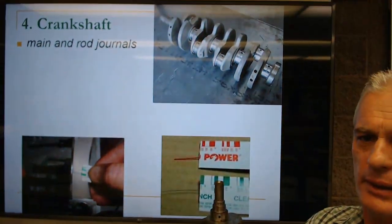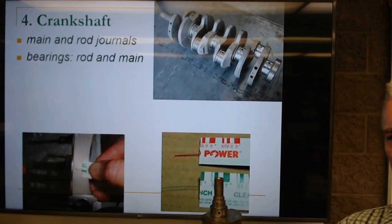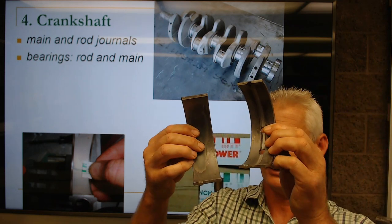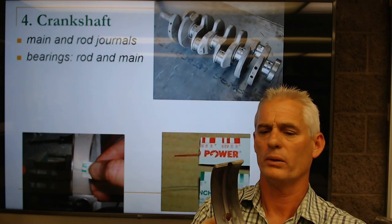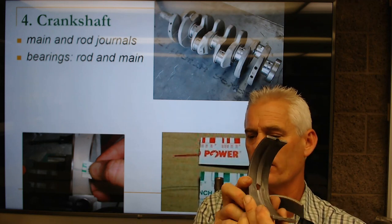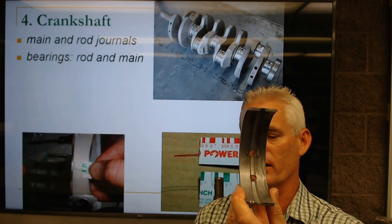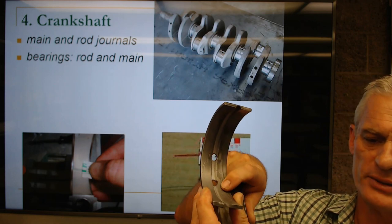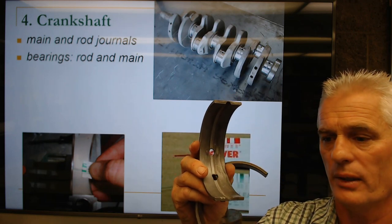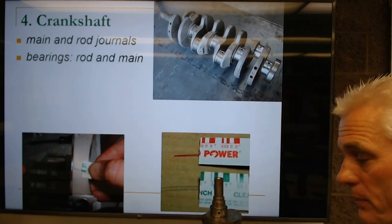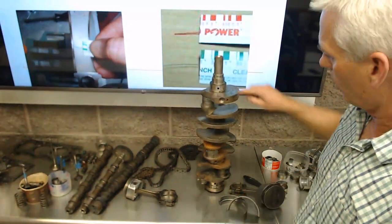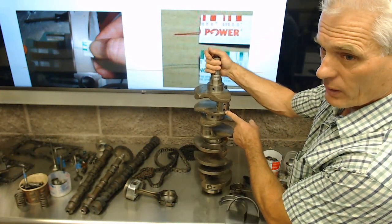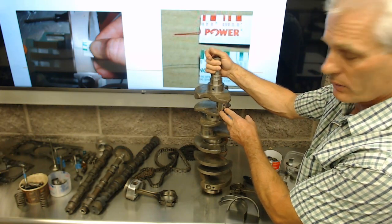There are main and rod bearings. These large Caterpillar main bearings have a hole where oil comes through and spreads out on the shell insert bearing so the crank main journal is floating on a pressurized sheet of oil. The groove allows oil to go through the hole in the main journal and travel to oil the rod journal, so we can lubricate the rod journals while the engine is running.